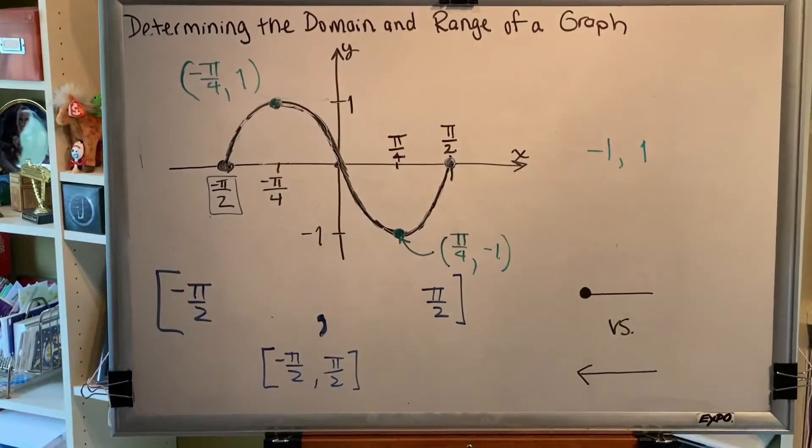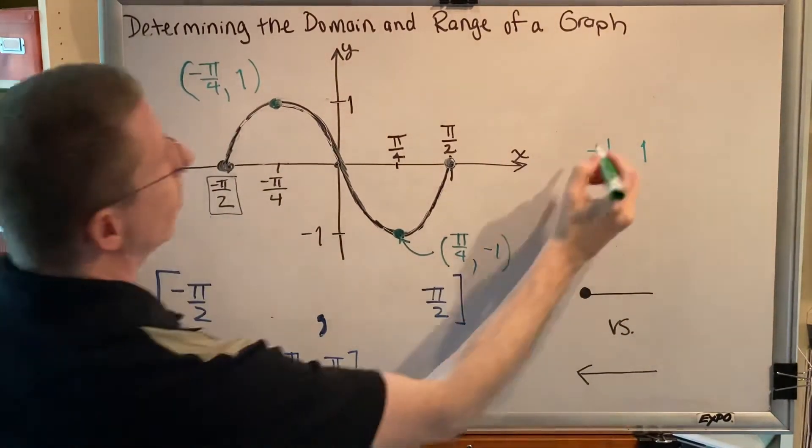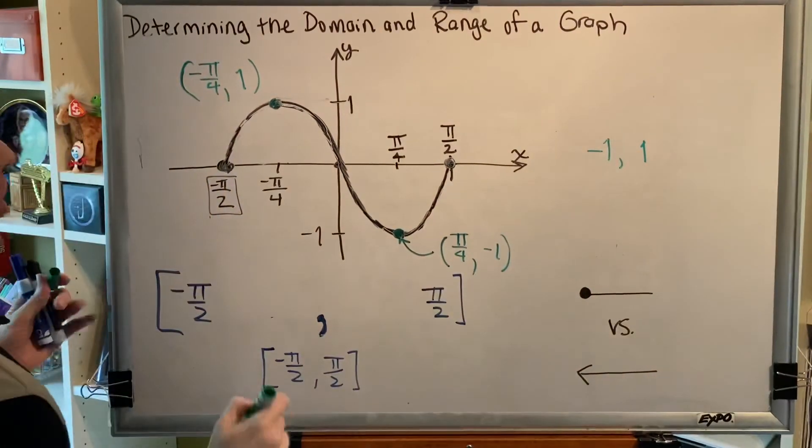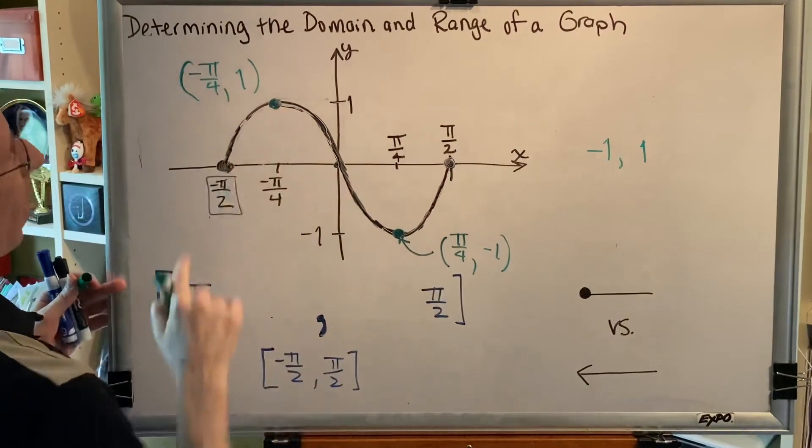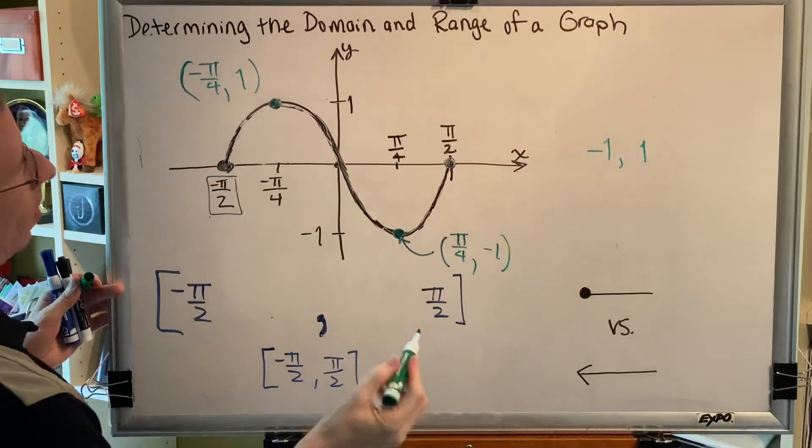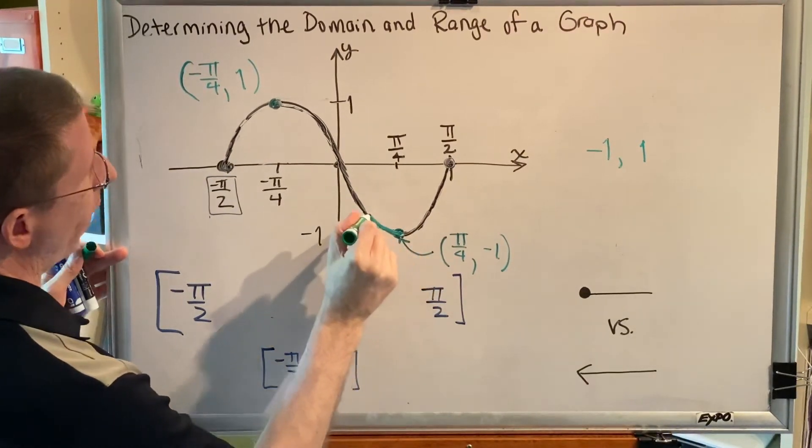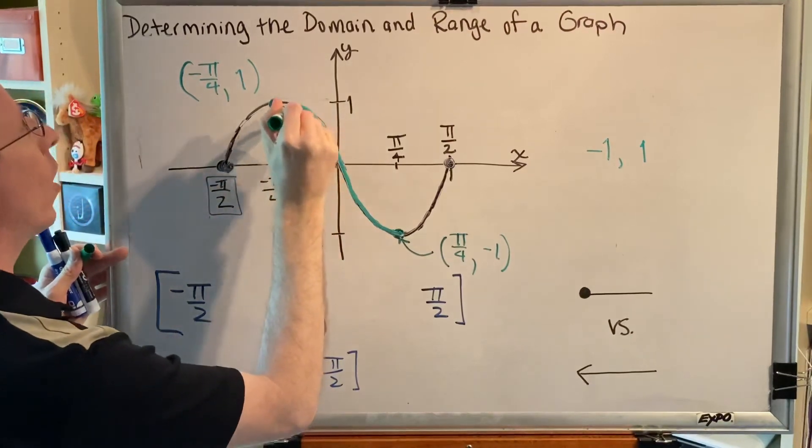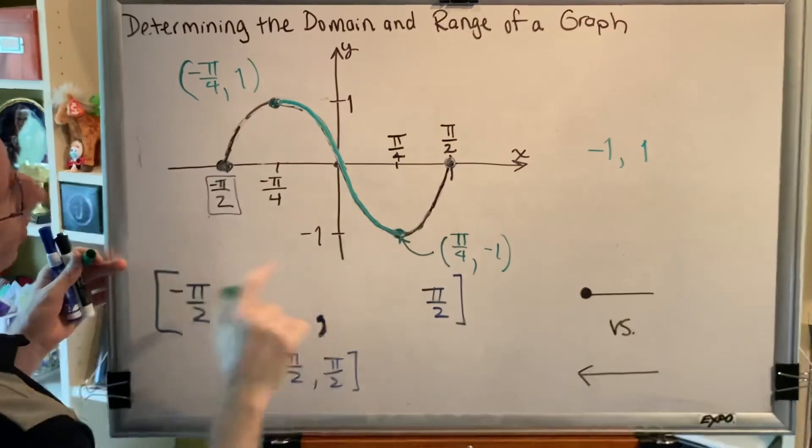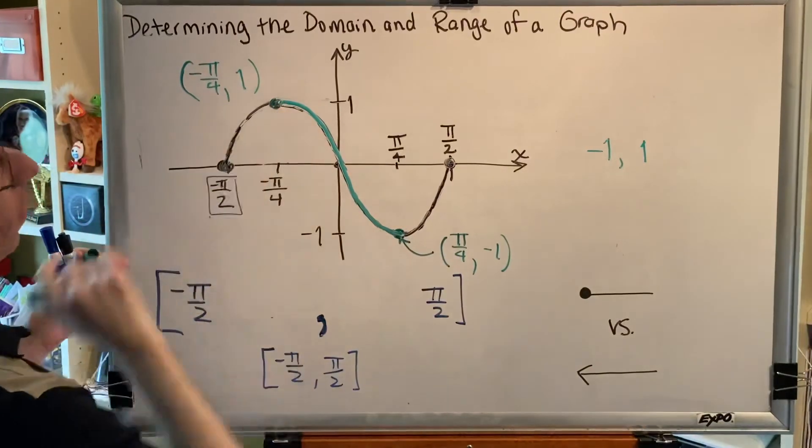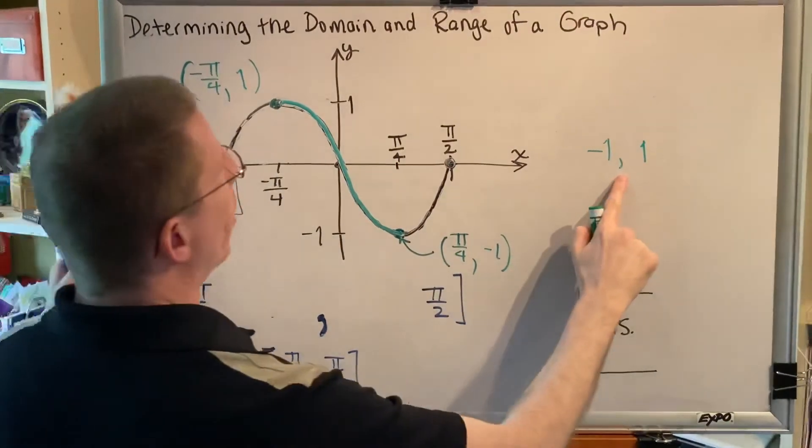Do we want all of the numbers in between there? Well, it depends. Can we draw a path from the smallest dot to the highest dot without picking up our marker? The answer is yes. Watch. As we travel from there all the way to there by moving along our curve, we pick up all of the y values from the negative 1 all the way to the positive 1, which is why we want an interval.